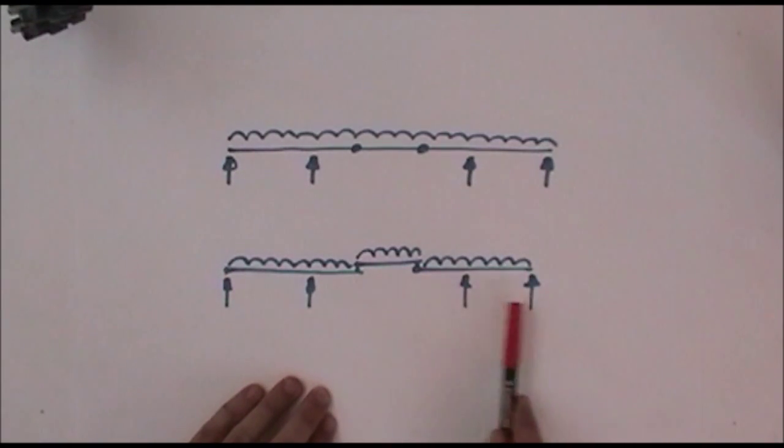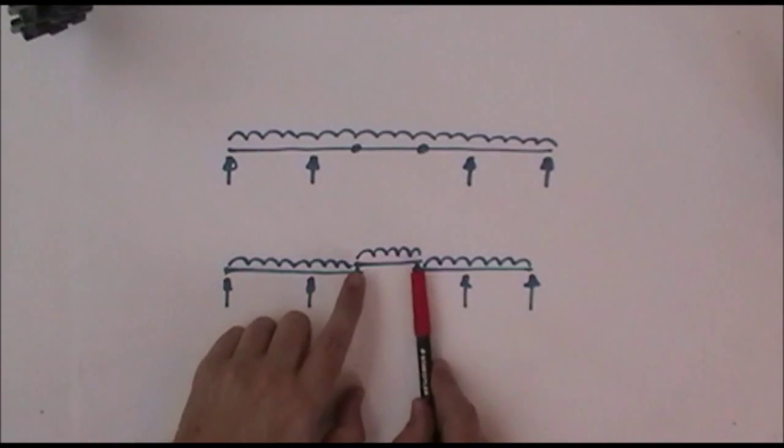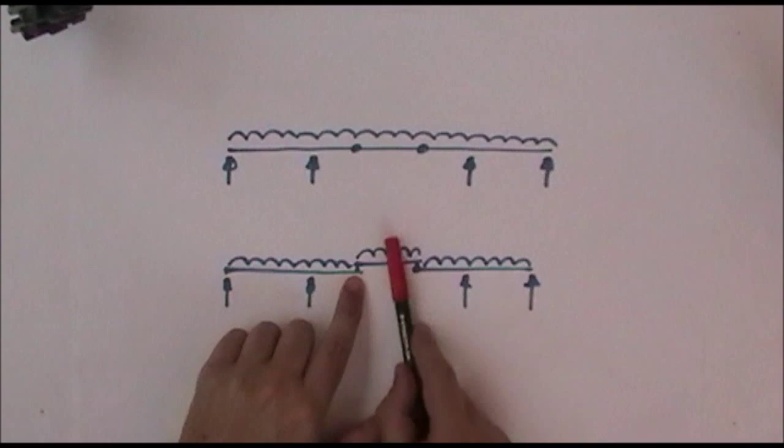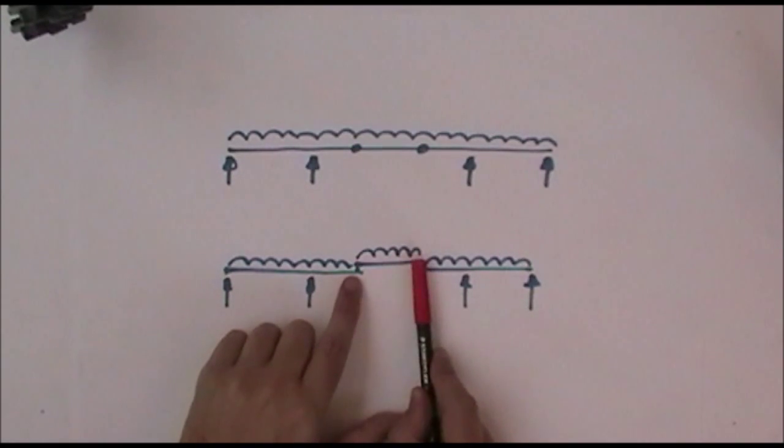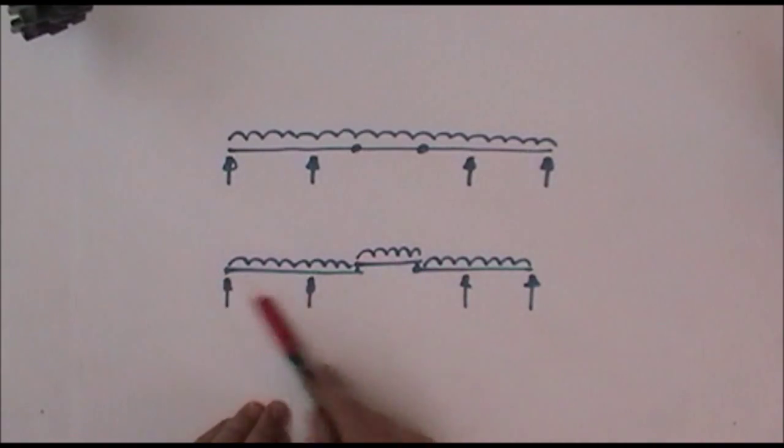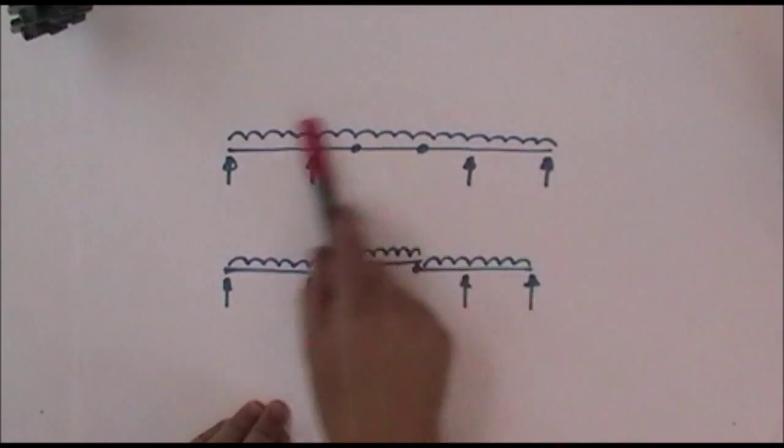And then later on, with these two beams cantilevering out, bringing in a so-called drop-in span which is supported there and supported there. Now this structure is identical to this structure, but by redrawing it in this way things become crystal clear.